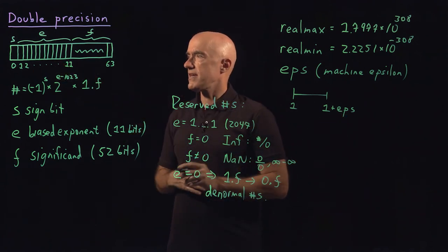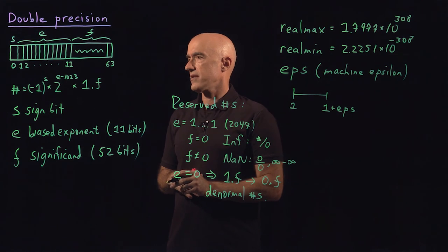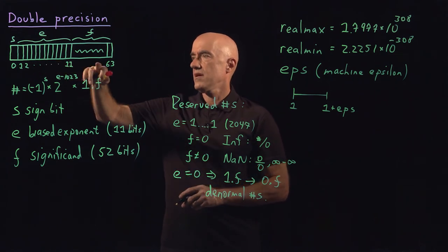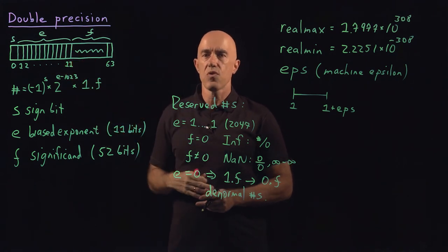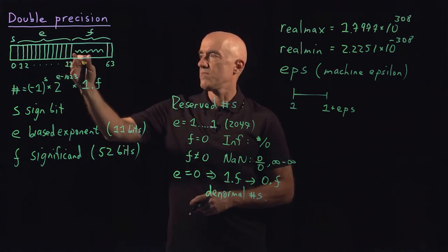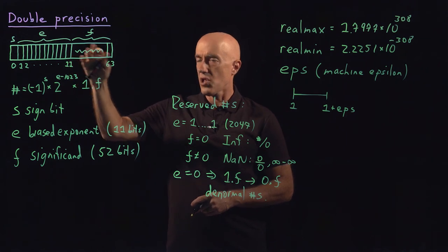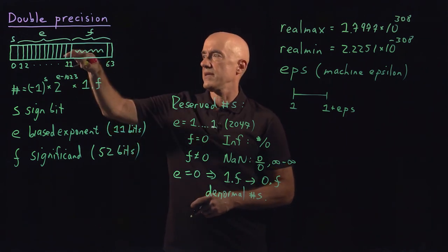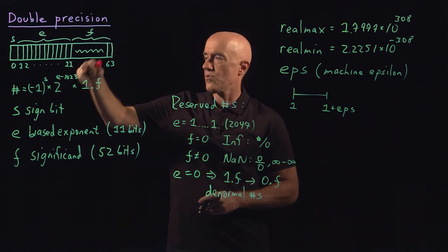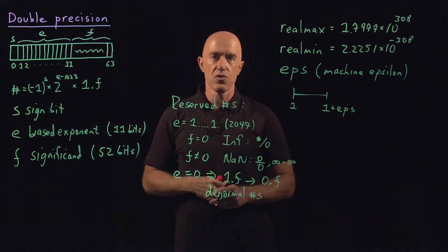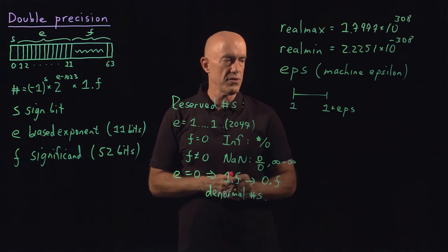Using the representation here, you can compute machine epsilon. You look at what is the representation of the number 1, and then what is the representation of the number that's the closest to 1. So that means you have a single F bit all the way down at the lowest possible value.